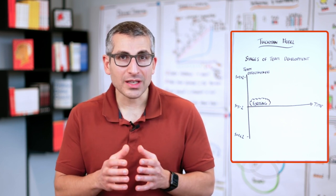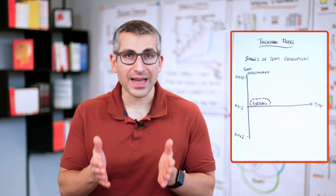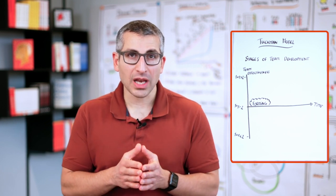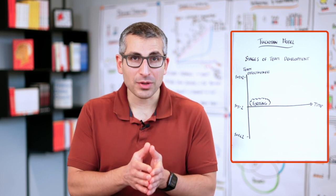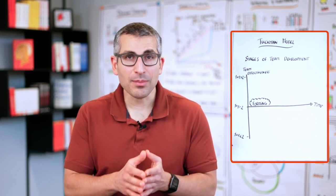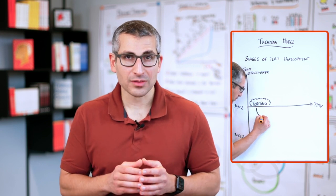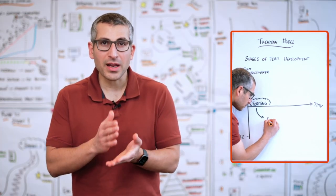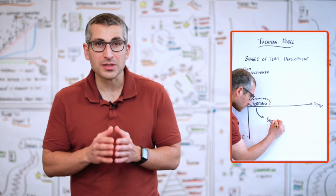But once the team starts to move towards tasks that require more collaboration, because ultimately, they are assembled based on having a common goal and needing each other, they move into the storming phase. Storming is characterized by a lot of friction, by a lot of arguments, maybe even fights.